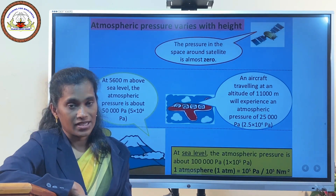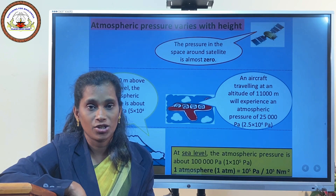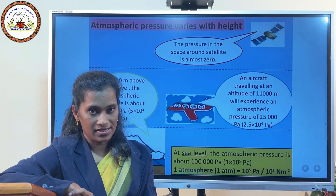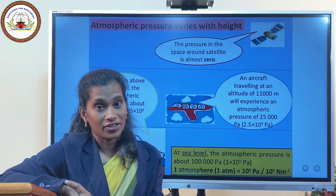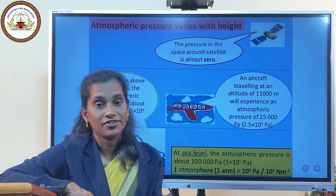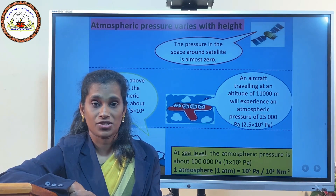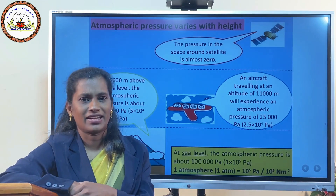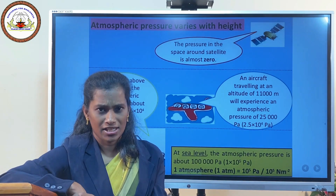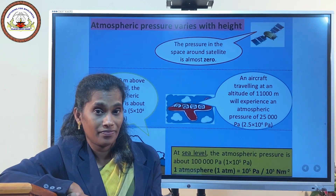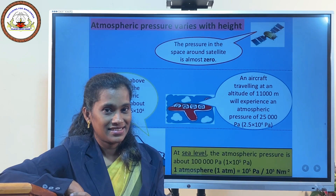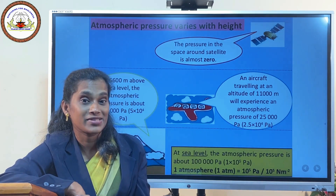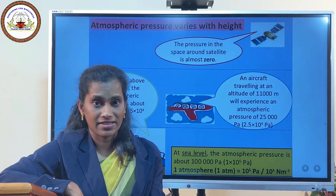At sea level, atmospheric pressure is measured to be 1,00,000 Pascal. As altitude increases, the density of gas decreases. At around 5,600 meters, atmospheric pressure is 50,000 Pascal. At an altitude of 11 kilometers, it is around 25,000 Pascal. In space, since there are no gaseous molecules, the atmospheric pressure around satellites is almost zero.